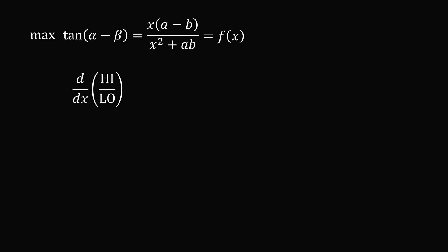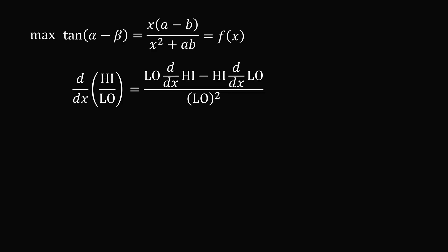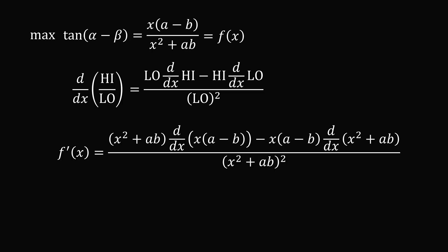We'll take the derivative, and we're taking the derivative of a quotient. You can remember the derivative of a quotient where you have high divided by low: the derivative equals low d-high minus high d-low, all over low squared. So f prime of x equals low, that's (x squared plus ab), multiplied by the derivative of high, which is x times (a minus b), minus high d-low — that's x times (a minus b) — multiplied by the derivative of the denominator, x squared plus ab. This is all divided by (x squared plus ab) squared. The derivative of x times (a minus b) is just (a minus b), and the derivative of x squared plus ab is 2x.